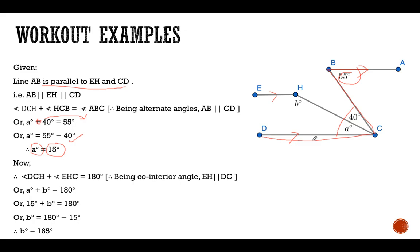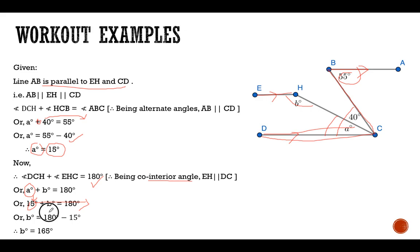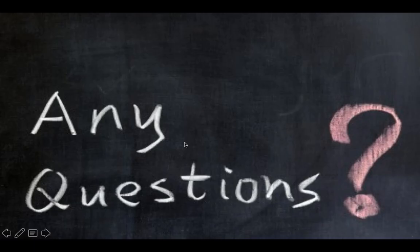Since the two lines are parallel, these two angles are co-interior, so a plus b equals 180 degrees. We know a equals 15, so substituting: 15 plus b equals 180. Moving 15 to the other side changes the sign, so b equals 180 minus 15, which gives b equals 165. We have found the values of both a and b.